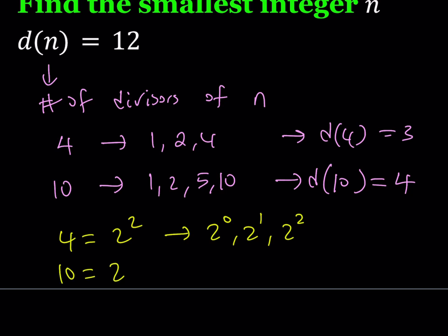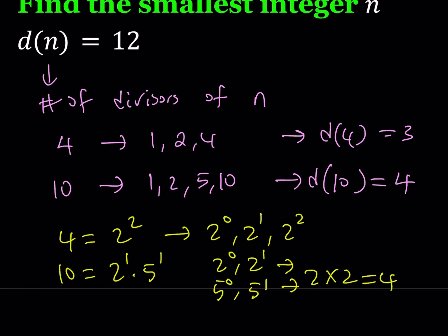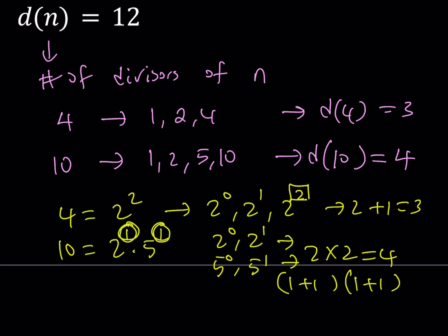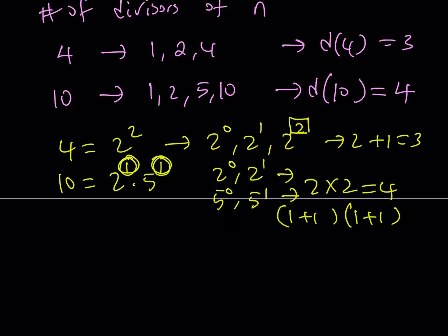Now let's look at 10. Well, 10 can be written as 2¹ × 5¹. Any divisor of 10 is going to contain 2 or 5 or both or none of them — so 2⁰ or 2¹, and 5⁰ or 5¹. We have two lists and we pick one from each, giving 2 times 2, which is four options. The rule is: look at the exponents in the prime factorization, increase each one by one, and multiply them to get the number of divisors. For 4, the exponent is 2, increase by one gives 3, which is d(4). For 10, it's (1+1) × (1+1) = 4. That's how we find the number of divisors of an integer.